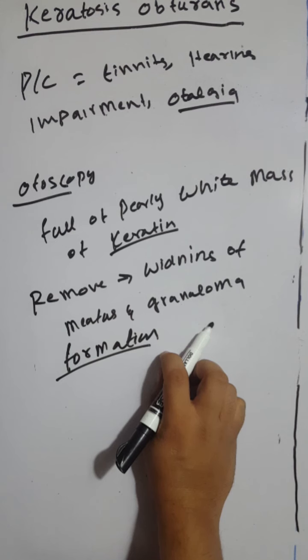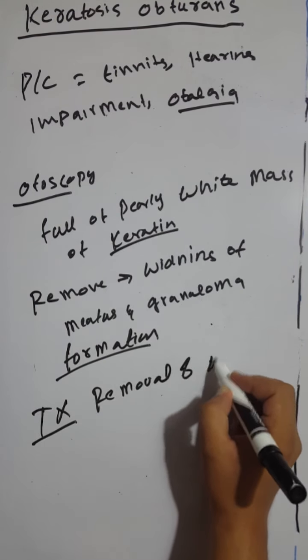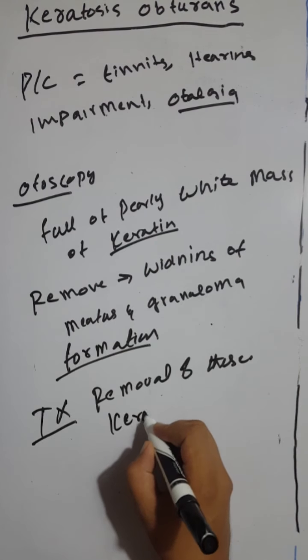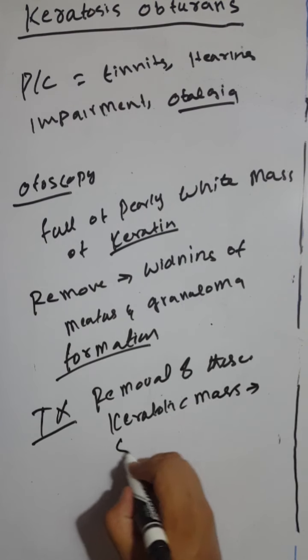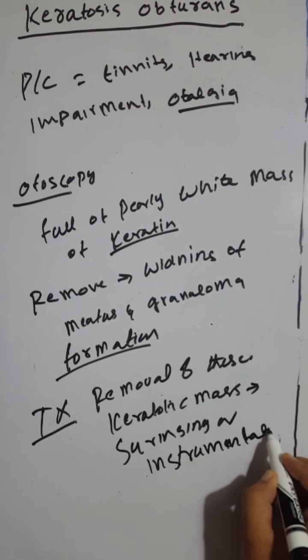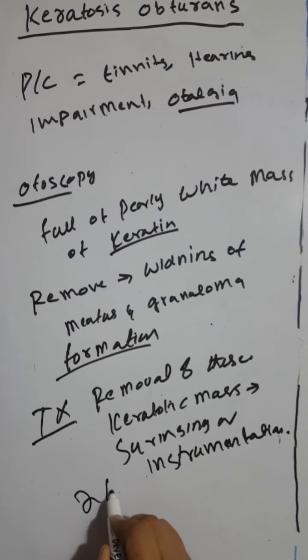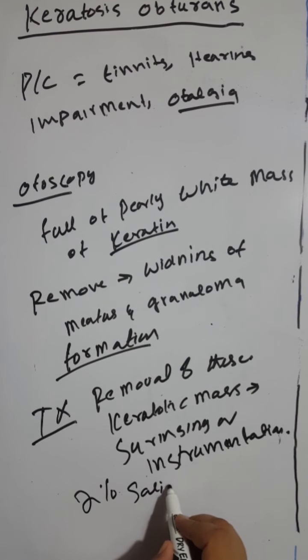The treatment for keratosis obturans includes removal of these keratotic masses by the help of syringing or instrumentation. The technique is the same as for impacted wax. We also use keratolytic agents such as 2% salicylic acid in alcohol to break these masses in the canal.